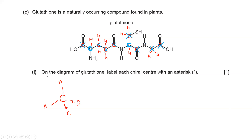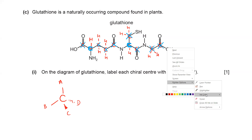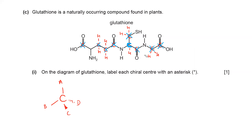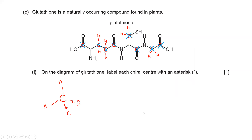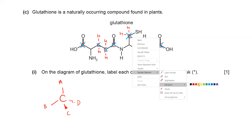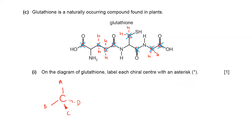So only two carbons, which I highlighted in blue, are chiral centers. The question says to label them with an asterisk symbol. In the exam paper, you do not need to draw all of this working. You only have to show the two asterisks for the two chiral centers.